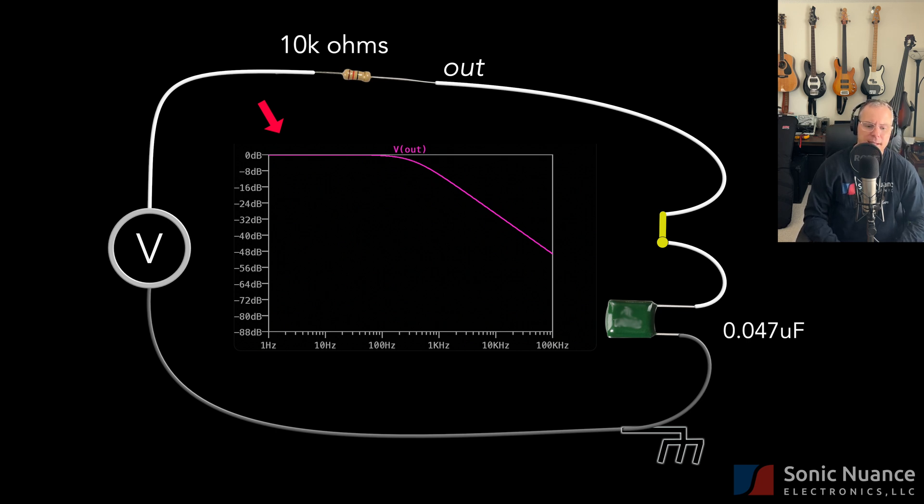At higher frequencies, the cap essentially becomes a short. Using the same voltage divider analogy, we know that combined with the 10k ohm resistor, this is going to give a lower and lower output, as shown here.